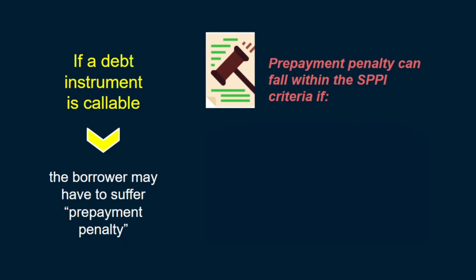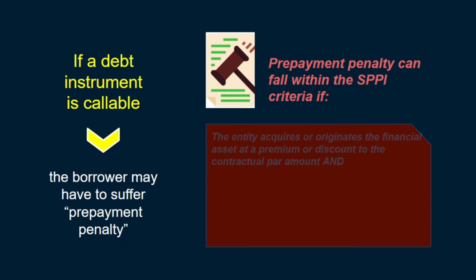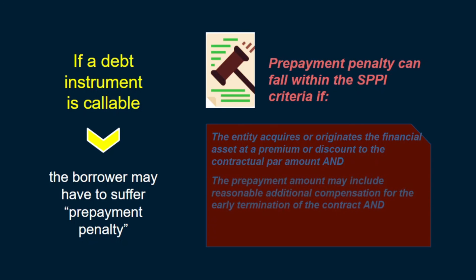The conditions are: the entity acquires or originates the financial asset at a premium or discount to the contractual par amount; the prepayment amount substantially represents the contractual par amount and accrued contractual interest, which may include reasonable additional compensation for the early termination of the contract; and when the entity initially recognizes the financial asset, the fair value of the prepayment feature is insignificant. I hope this video gave you a very clear perspective on analyzing contractual cash flows and whether they meet the SPPI criteria. In the next video we'll be talking about the de-recognition of financial assets and liabilities.